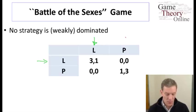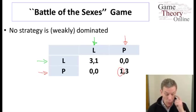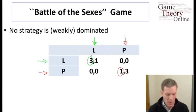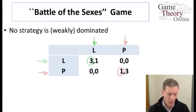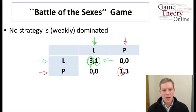If the column player is choosing P, then the best response of the row player is P as well. The dependence of what the best reply is depends on the other player's strategy. If we're looking for stable points, we can see that L,L — if they're both playing L — then 3 is the best response for the row player. Choosing L gives them the maximum payoff. The 1 here is also the best response for the column player, so we have a stable set of strategies. L,L is an equilibrium.